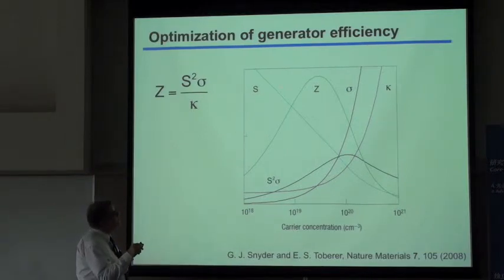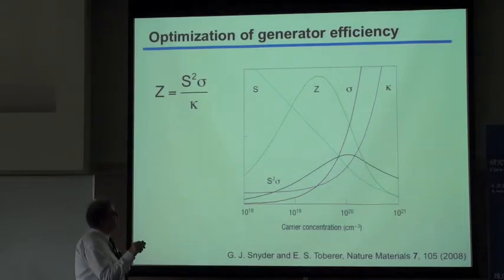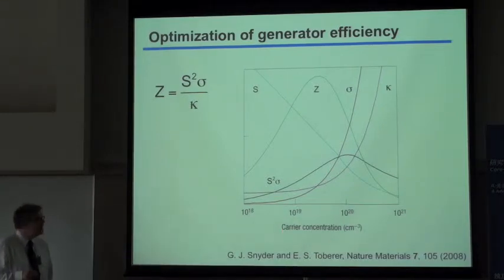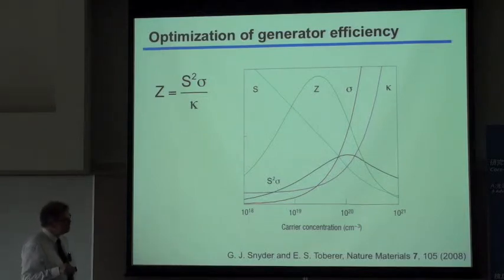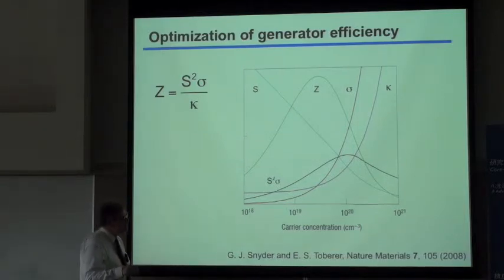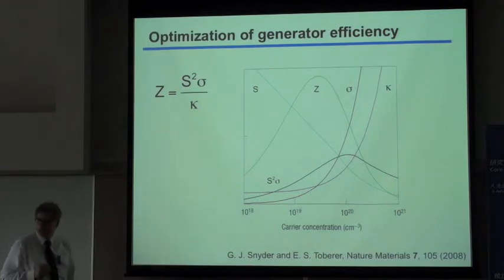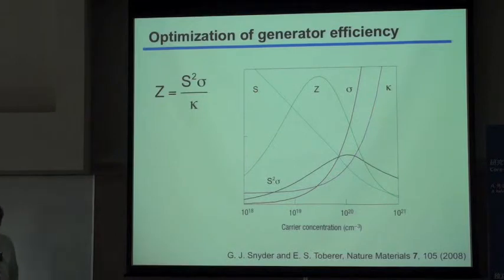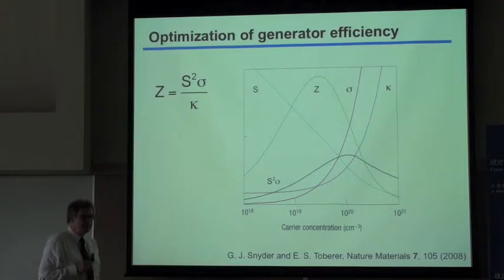Now we can look at what kind of materials we should use to optimize this figure of merit Z. The Seebeck coefficient is very high in semiconductor materials and very low in metals. Plotting this as a function of typical carrier concentration — from 10¹⁸ for degenerately doped semiconductors to 10²¹–10²² per cubic centimeter for metals — you see a drastic decrease in S. Therefore, you would prefer to fabricate a thermoelectric generator from a semiconductor.